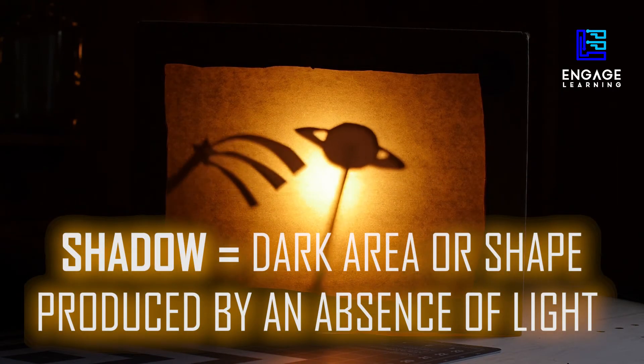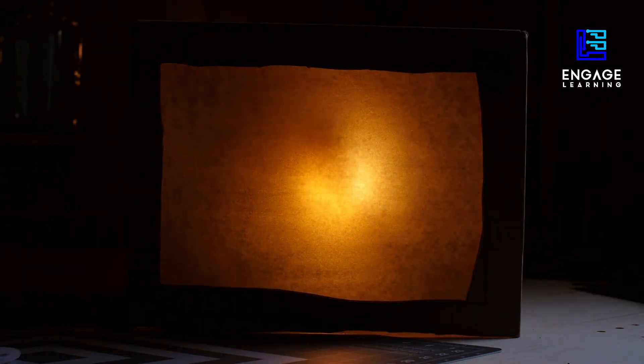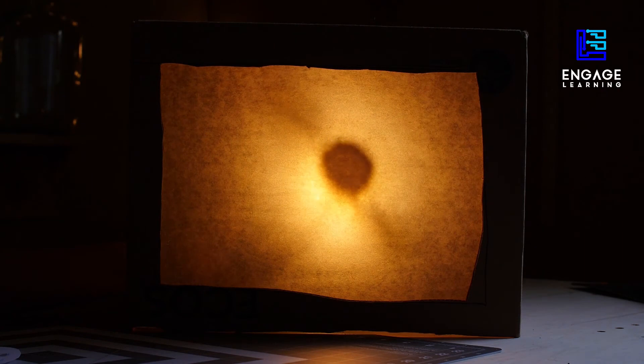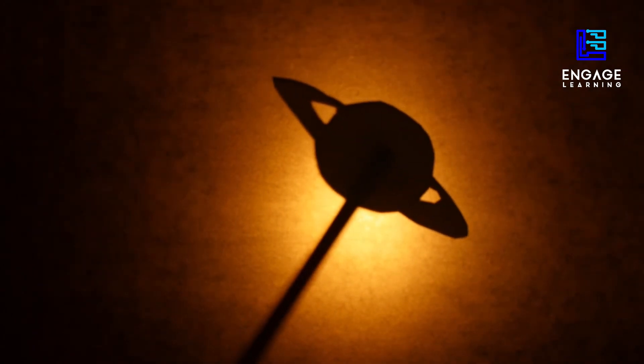A shadow is a dark area or shape produced by an absence of light. The closer an object is to a light source, the bigger the shadow will be. Moving the object away from the source and closer to the screen makes the shadow shrink and become more defined.